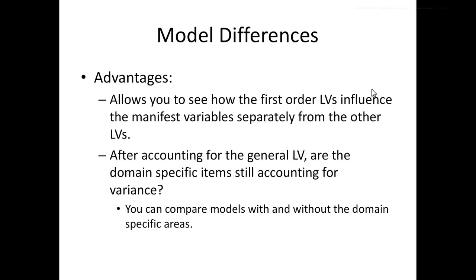And then now, the advantages of a bifactor model is it allows me to see how those first order latents, those domain-specific areas, influence my manifest variable separately from these other latents. And so after accounting for that generalized latent variable, what domain-specific items still work? So it might be that these items that you expect to account for stress really are just normal, psychological, whatever, and it doesn't account for anything. So it's all part of that generalized domain and does nothing for you in the specific areas. So you could build a model that included just the generalized factor and one domain and see if that's better than a model that includes all three.